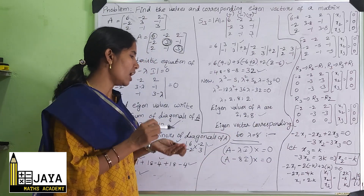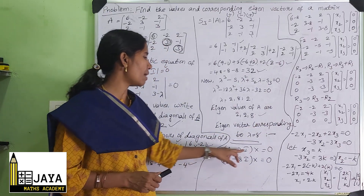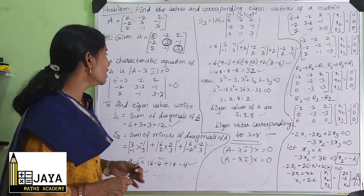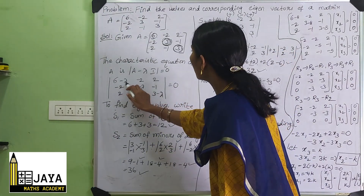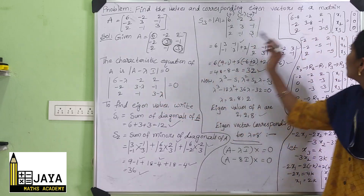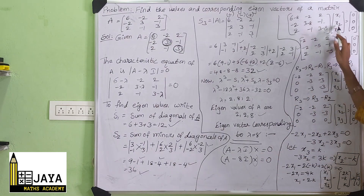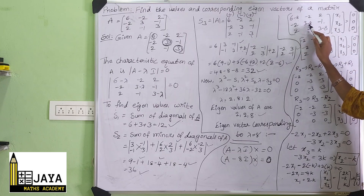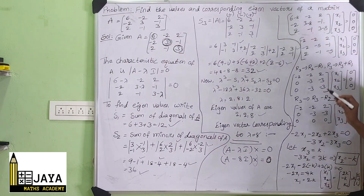Now we want to find the corresponding eigenvectors. First, finding the eigenvector corresponding to λ = 8. Using (A - λI)X = 0, substituting λ = 8, we form A - 8I: [[6-8, -2, 2], [-2, 3-8, -1], [2, -1, 3-8]] = [[-2, -2, 2], [-2, -5, -1], [2, -1, -5]]. Then [X1, X2, X3]ᵀ = [0, 0, 0]ᵀ. We convert this matrix to echelon form by row operations.